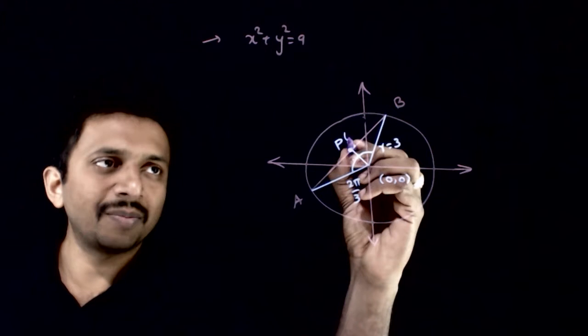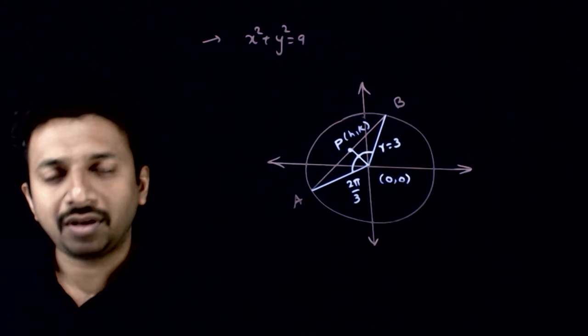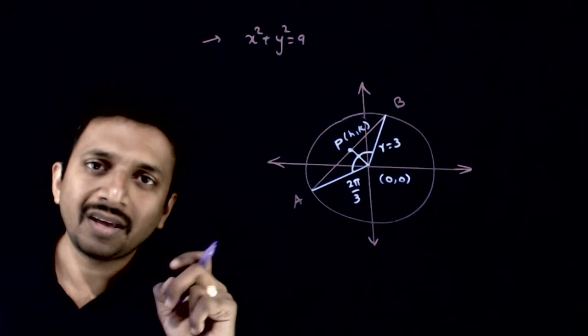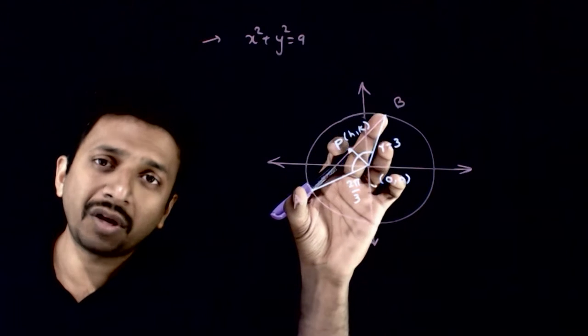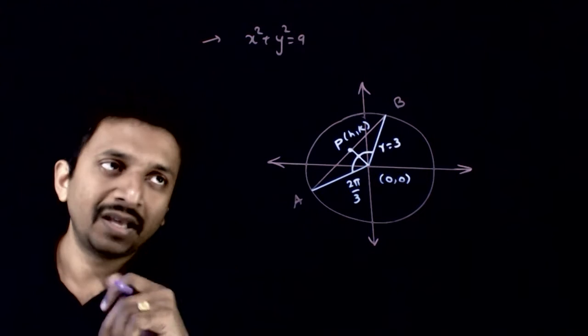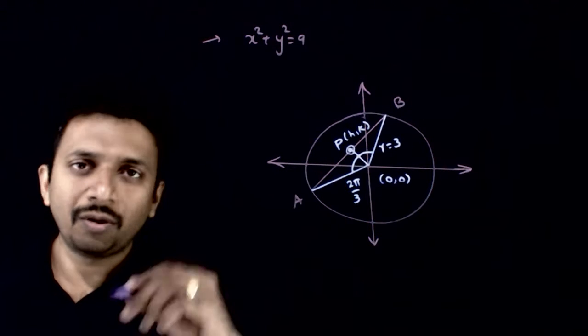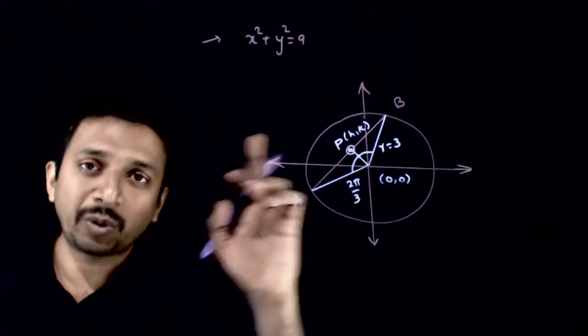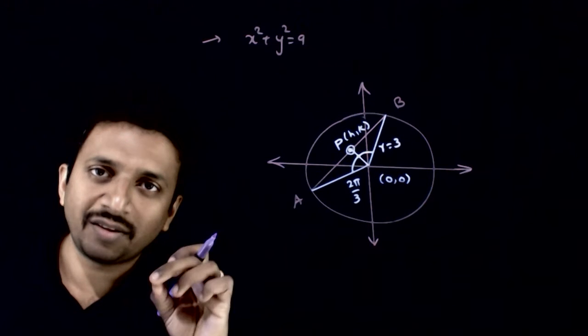So let us say that P be a point on the locus. That means this is the midpoint of one of the chords which subtends an angle of 120 degrees at the center. So now if P is a point on the locus, let AB be the chord corresponding to this point. Now this chord subtends an angle of 2π by 3.